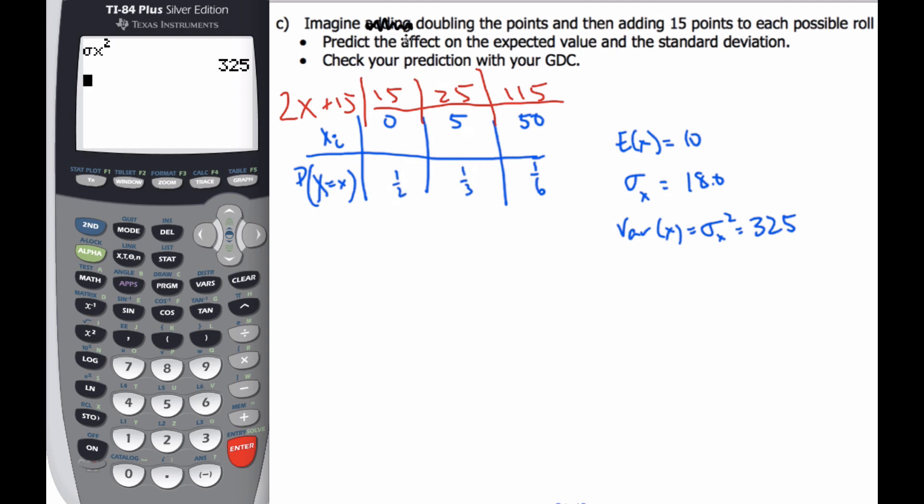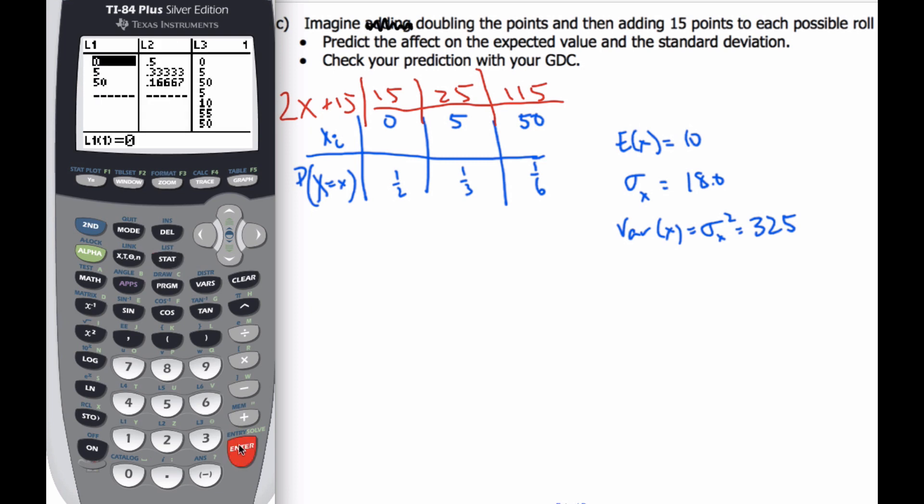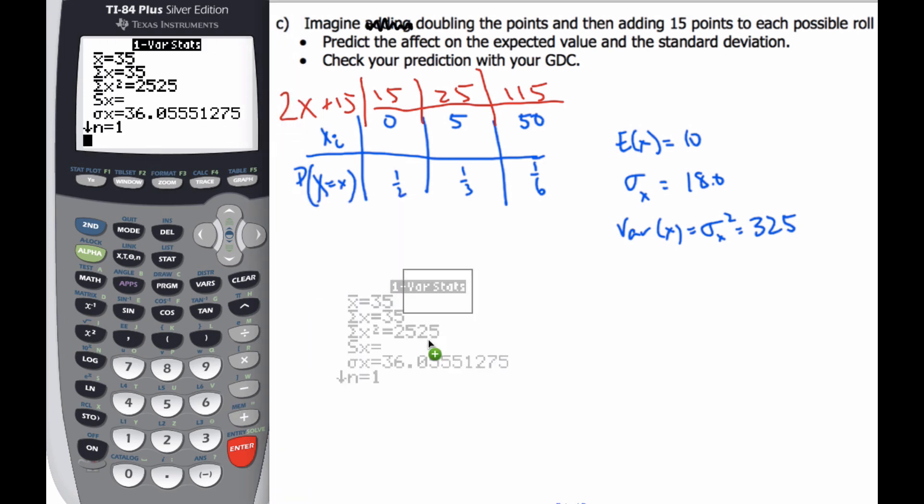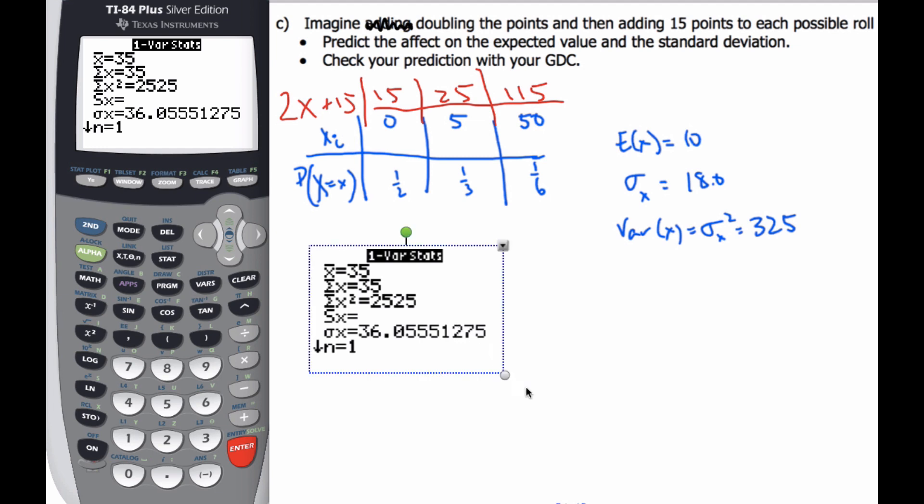They have the corresponding probabilities. And so if I predict what's going to happen, this multiplies all my values and then this shifts it. So if I check these values with my calculator, I'm going to change L1 to 15, 25, and 115. And then do my calculations all over again. And here's what I get.